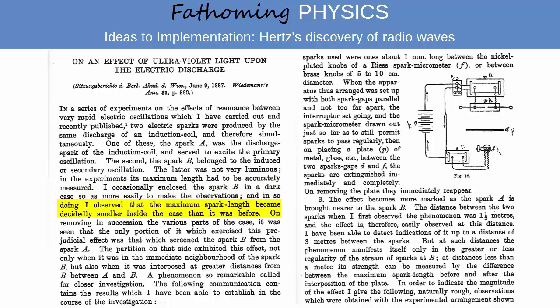He established that it was only the part of the box directly between the primary and secondary sparks that caused the effect. He found that the reduction in the maximum length of the spark occurred for a range of materials, including glass, paraffin and metals, but not quartz.